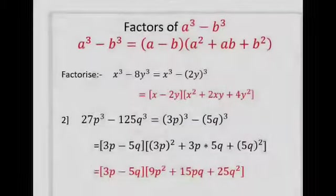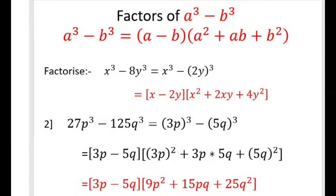Factors of a cube minus b cube. a³ - b³ = (a - b)(a² + ab + b²). Let us solve some examples using the above formula for factorizing the difference of two cubes. The first example: x³ - 8y³. We have to first form it into a³ - b³. So x³ minus — for 8y³ it will become (2y)³.